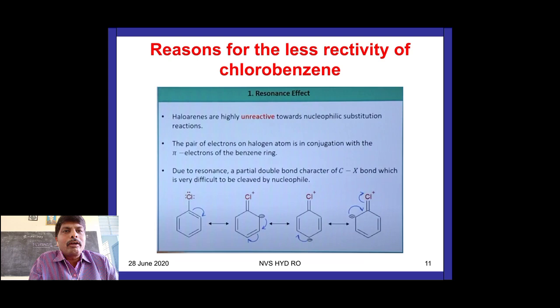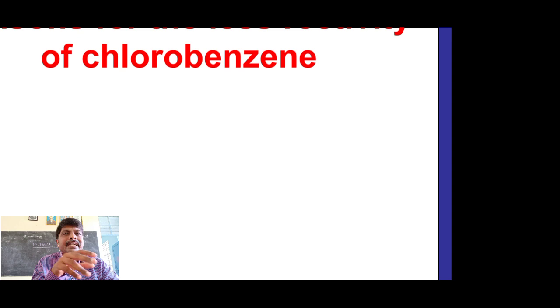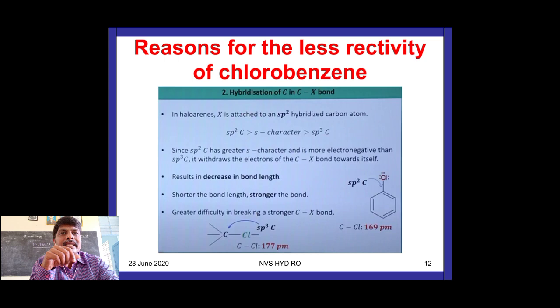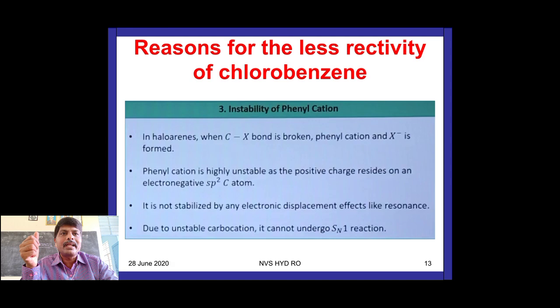The reasons for the less reactivity of chlorobenzene towards nucleophilic substitution: First, resonance effect — the bond between the halogen and the benzene ring has partial double bond character due to resonance, so more energy is required to break it. Second, the halogen is attached to an sp2 carbon, which is smaller, so the attraction is stronger and more energy is required to break this bond.